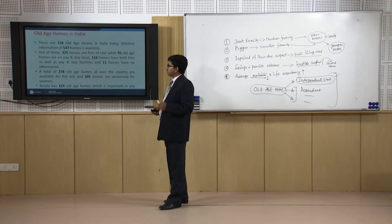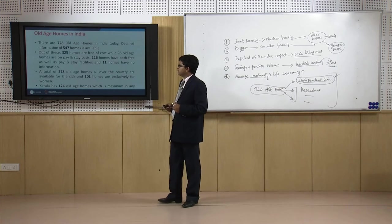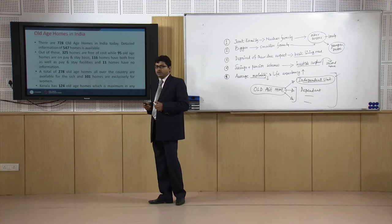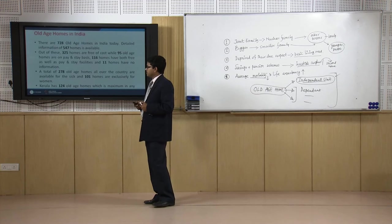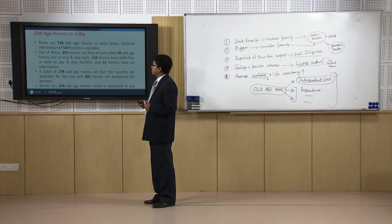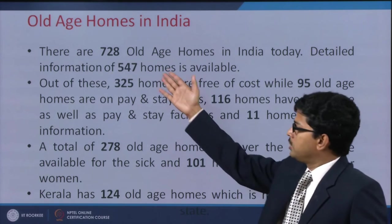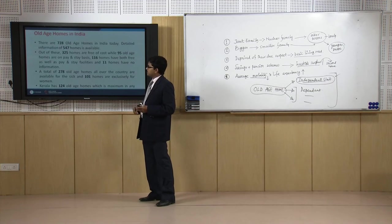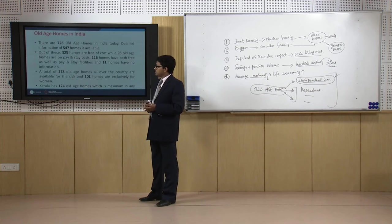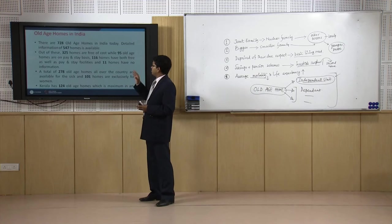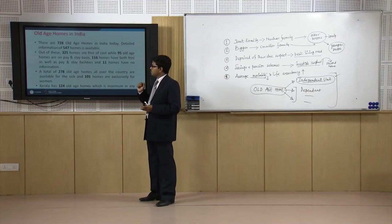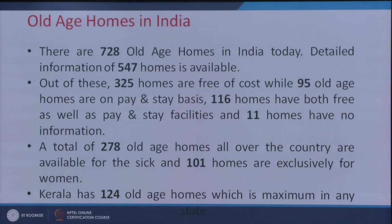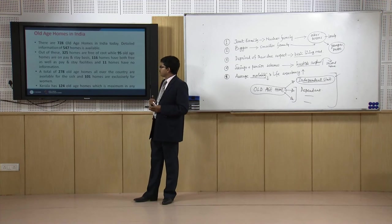This is the situation of old age homes — you can see at a glance the overall picture of how India as a whole has old age homes. Not 100 percent of the information is available, but from various data collected, there are around more than 700 old age homes, and information on around 550 is available. Around 300 homes are free of cost, 95 old age homes are on pay-and-stay basis, and most free-of-cost homes are provided by state governments. Around 116 homes have both free as well as pay-and-stay facilities based on economic capability, and 11 homes have no information.